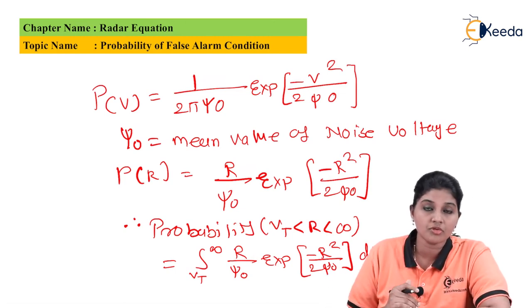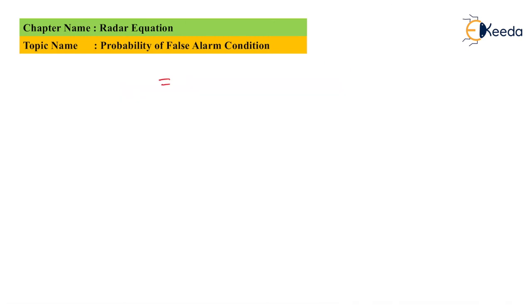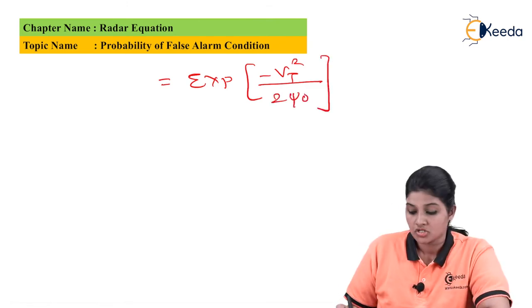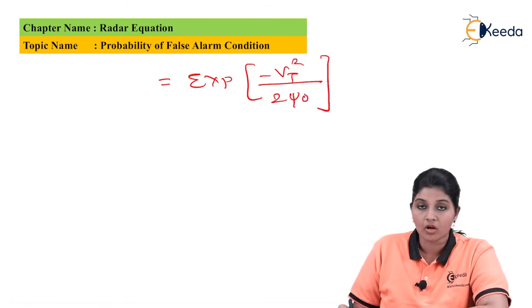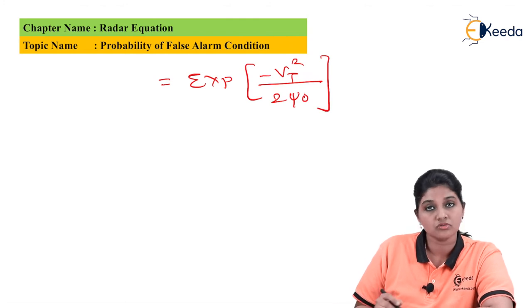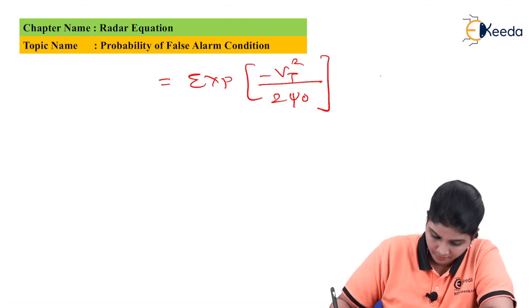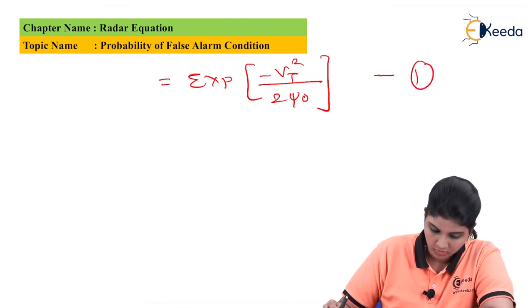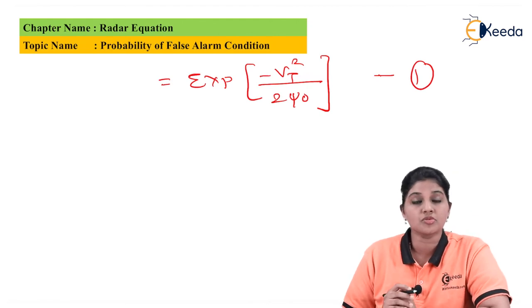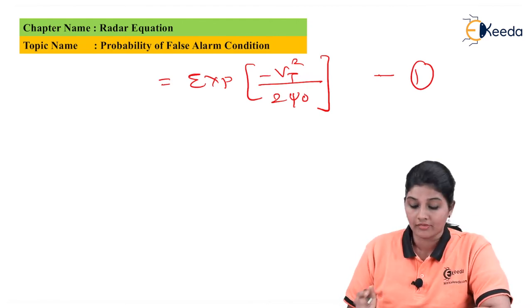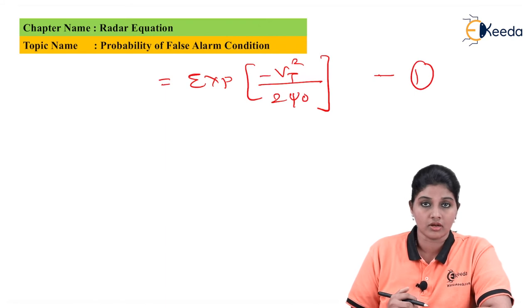Exponential of minus Vt squared upon 2σ₀. Let's give this as equation number 1.0. This indicates the probability of false alarm.